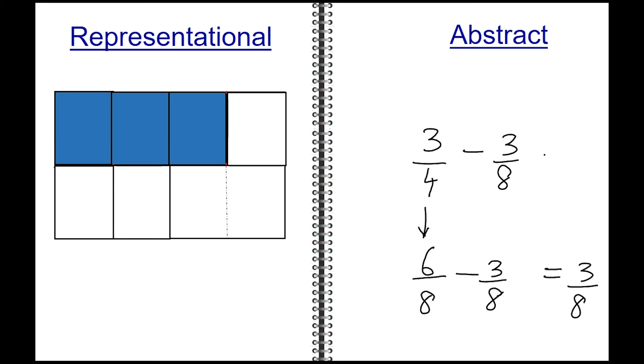So basically, 3 fourths minus 3 eighths is equal to 3 eighths.